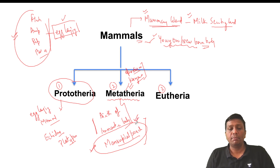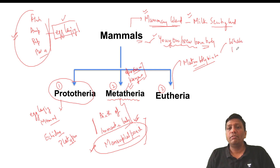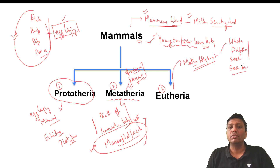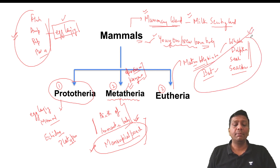Eutherians give birth to fully mature, developed babies and are the most highly advanced group of mammals. Examples include humans, cows, buffaloes, whales, dolphins, seals, and dugongs. The dugong is called the sea cow. Do not be confused — whales, dolphins, seals, and dugongs are mammals, not fish. Even bats are not birds — bats are also mammals. Examiners may try to confuse you with these examples.